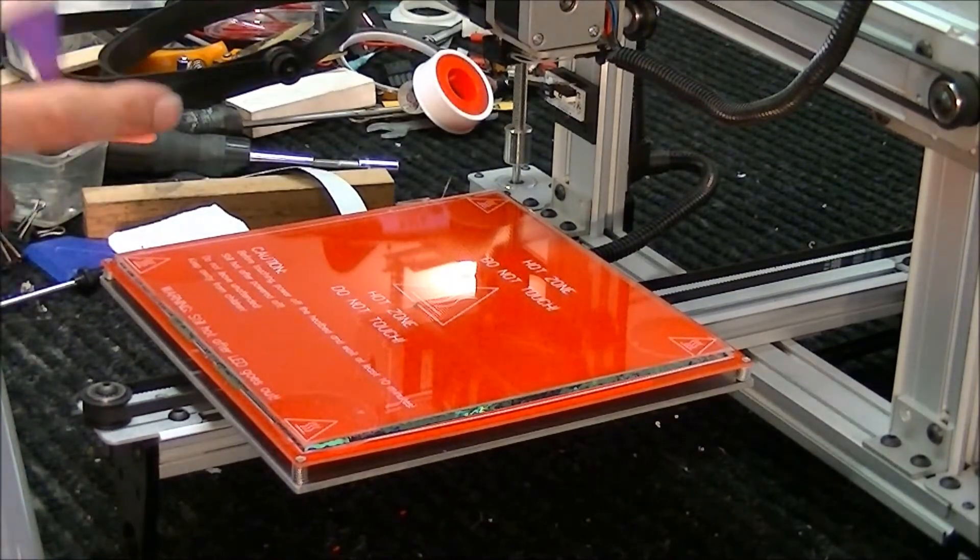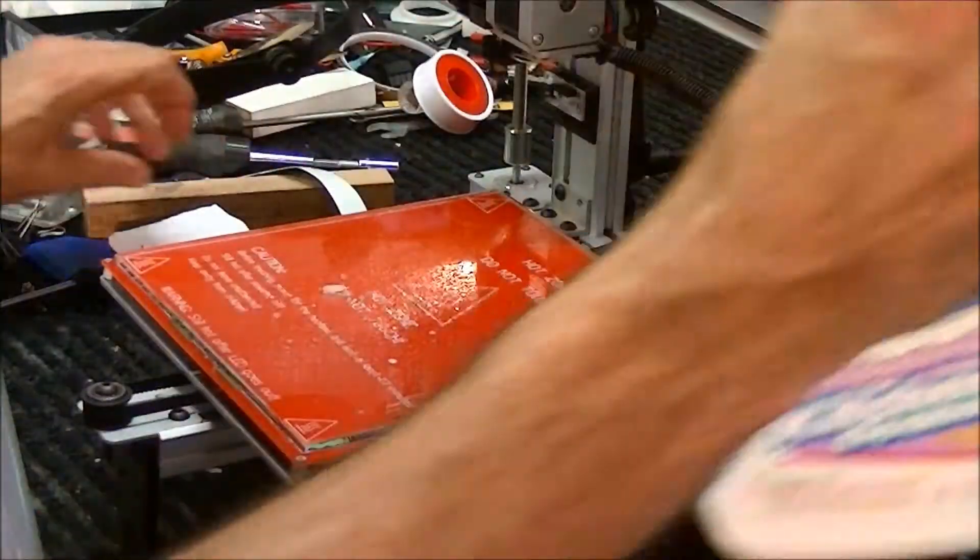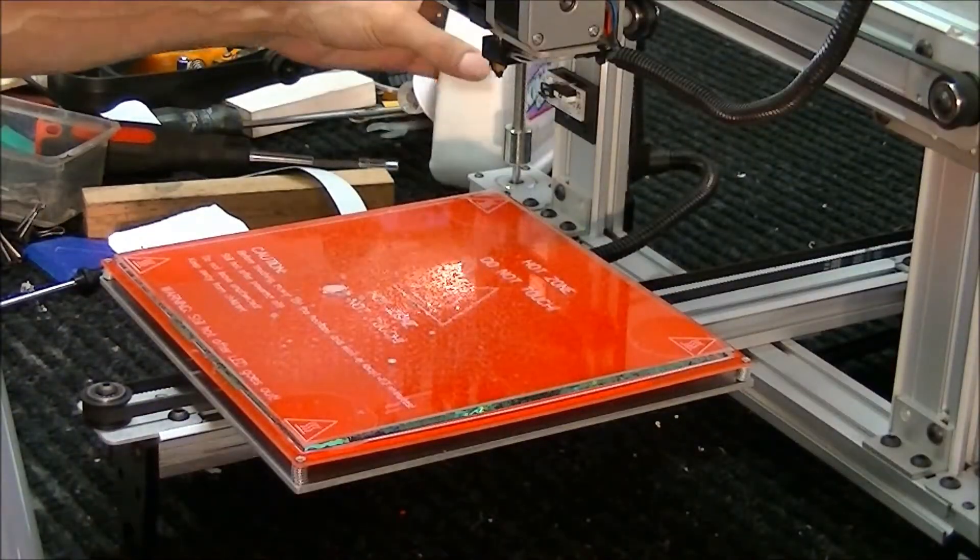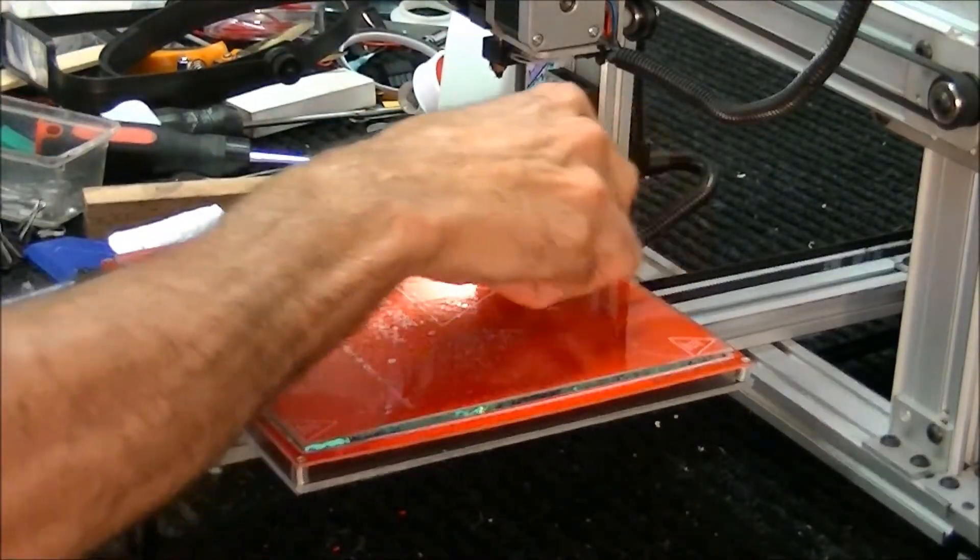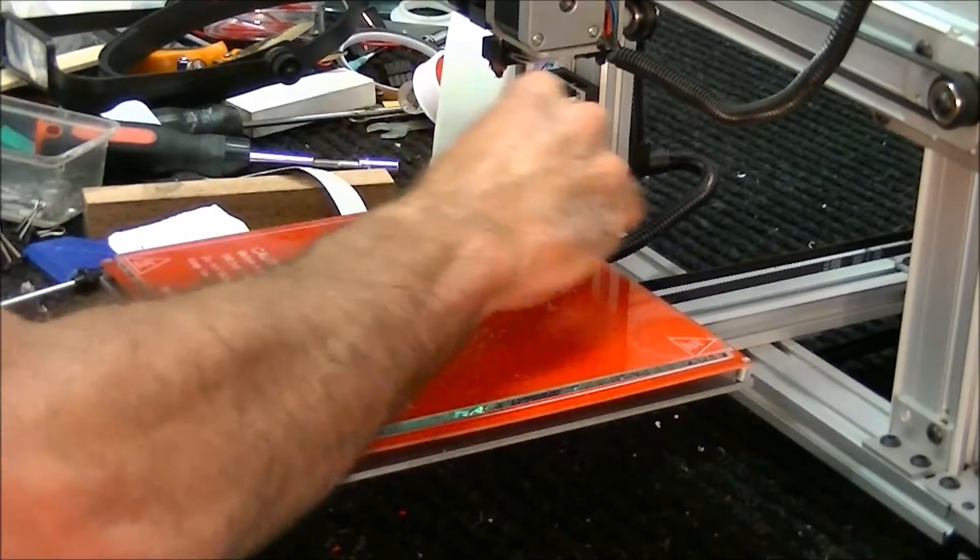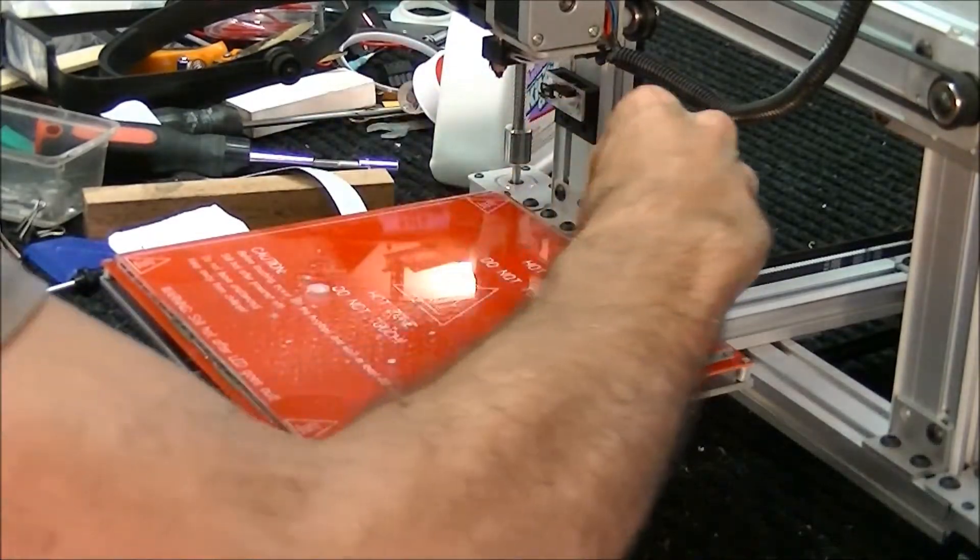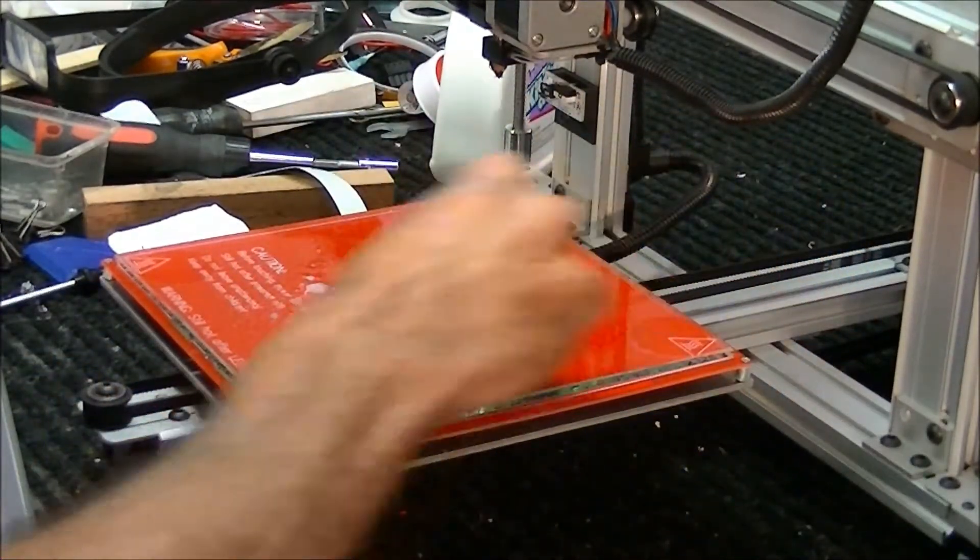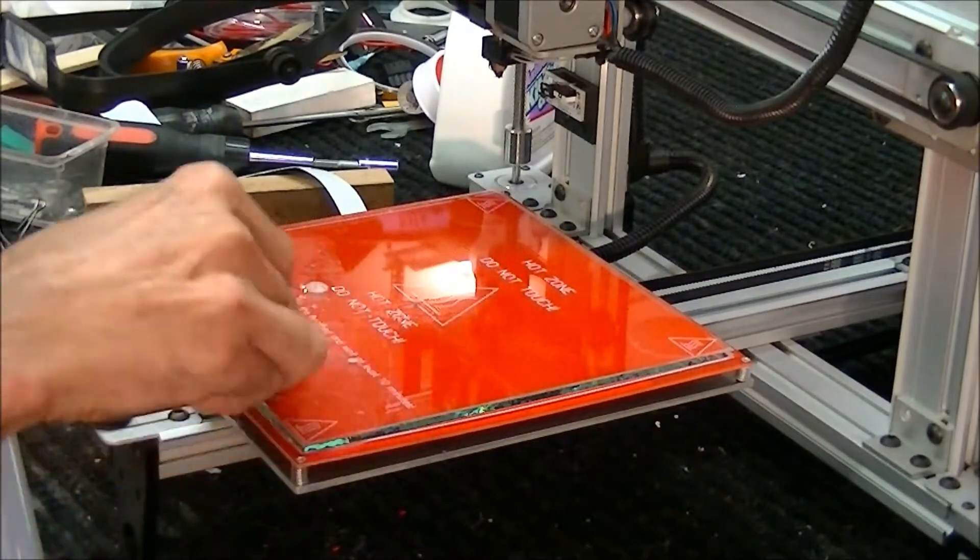Then what I do, I'll squirt it with a little bit of water. I'll take a sharp razor blade. Just make sure there's nothing, none of the glue is left on the glass bed because it'll cause problems when you go to put another one on.